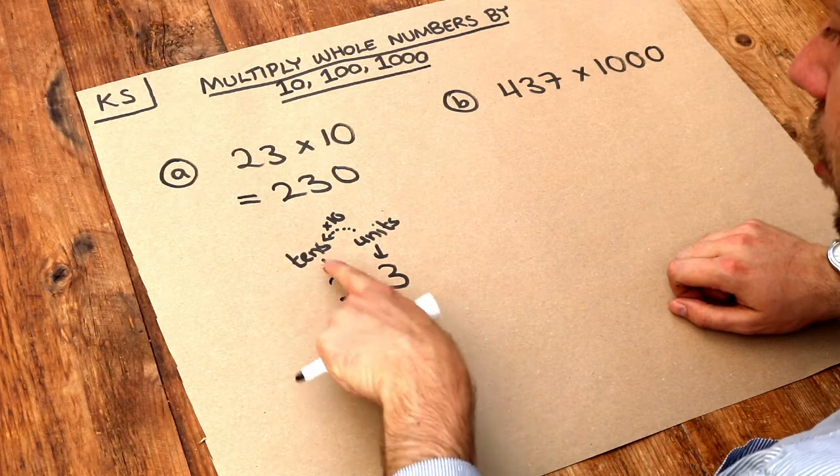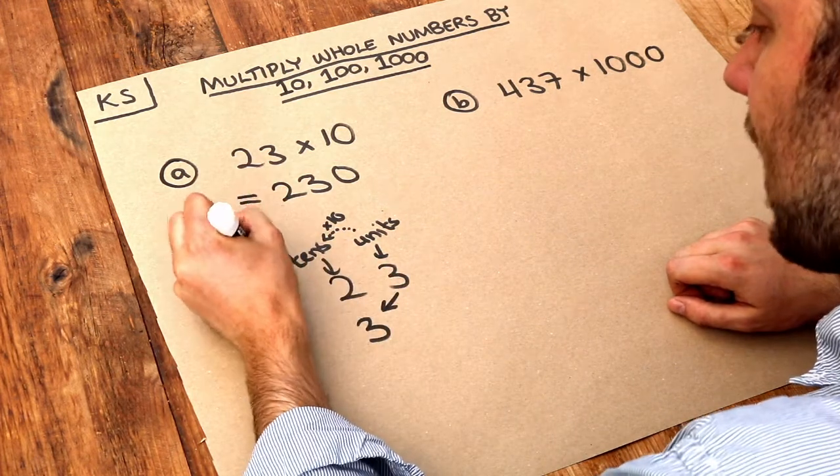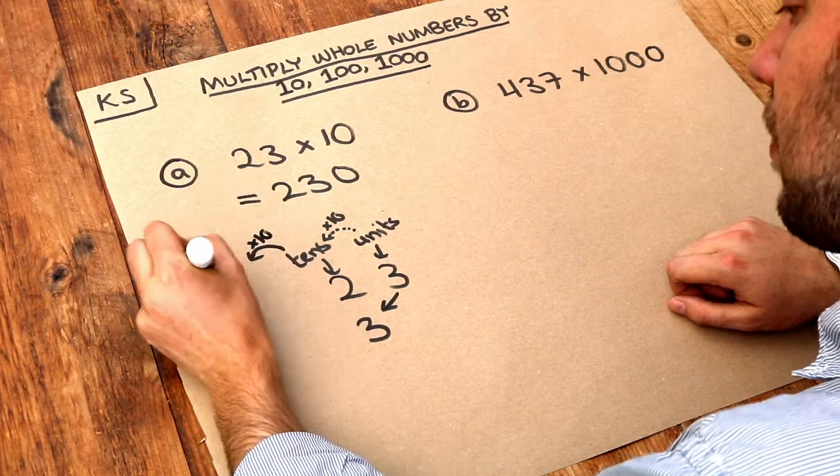And then that tens digit of 2, well if it's the tens digit, if you times by 10, that then becomes the hundreds digit.